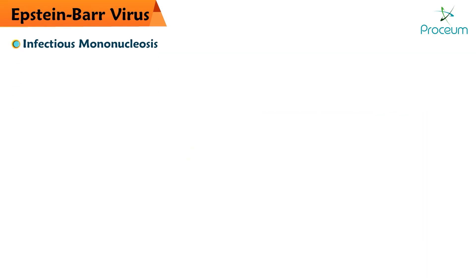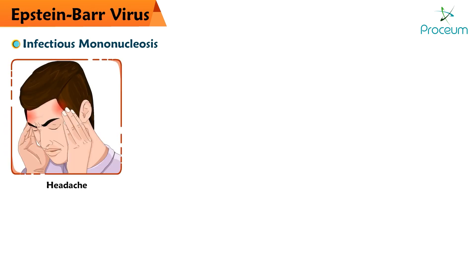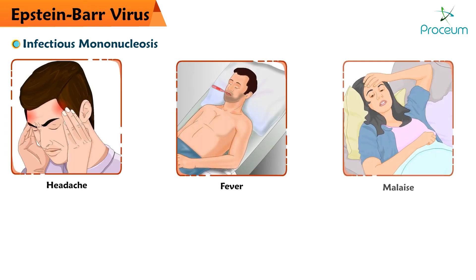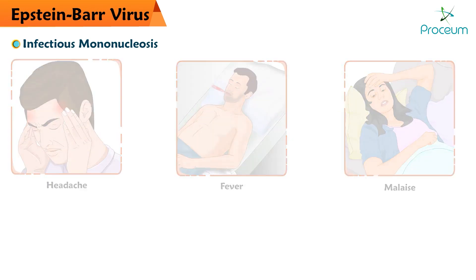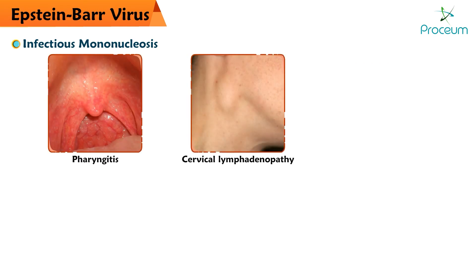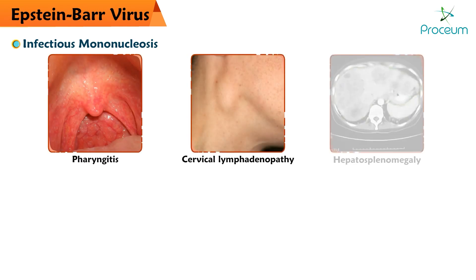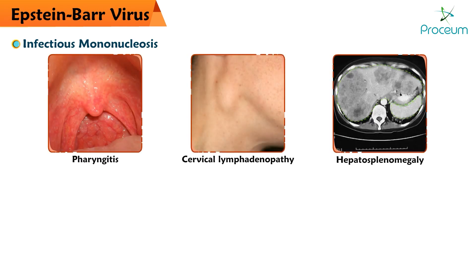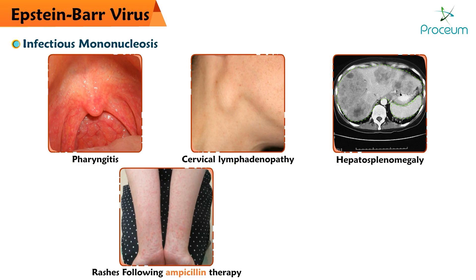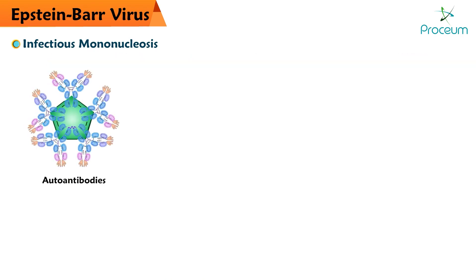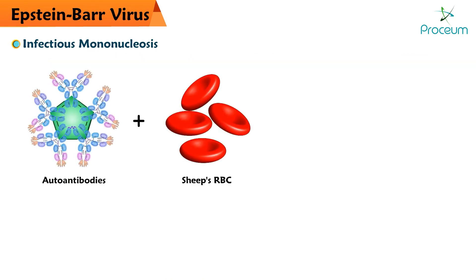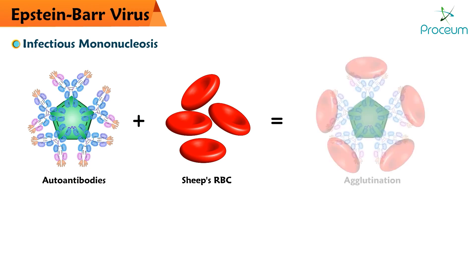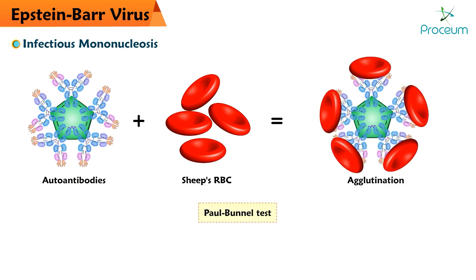Features of the Epstein-Barr virus include headache, fever, malaise, pharyngitis, cervical lymphadenopathy, hepatosplenomegaly, rashes following ampicillin therapy, atypical lymphocytosis, CD8 T-cells, and autoantibodies reactive to sheep red blood cell antigens, which are detected by the Paul Bunnell test.